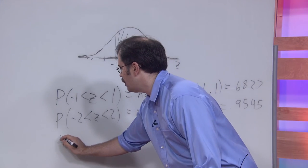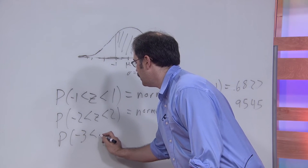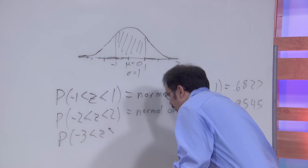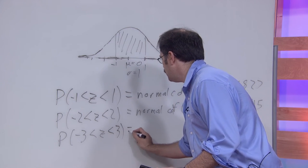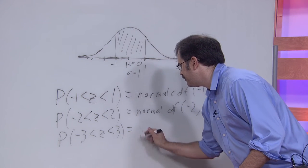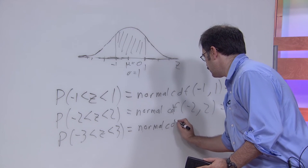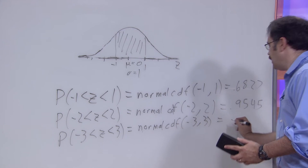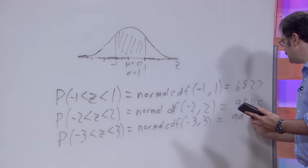And if you try the probability that z is between negative three and three, what you'll see when you type in normal CDF negative three comma three, the number that you would get there is .9973.